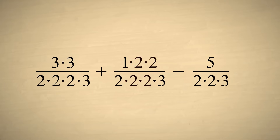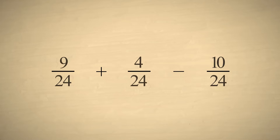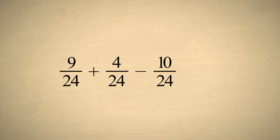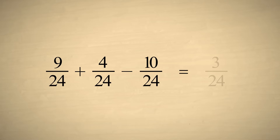And one factor of two to the third denominator. This gives us a least common denominator of twenty-four, and a total of three twenty-fourths.